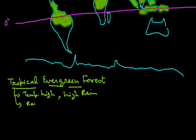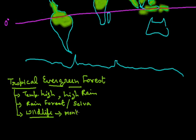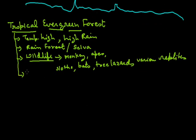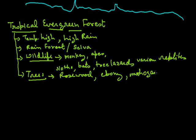These forests are also known as rainforests or Selva. The rainforests are rich in species of wildlife. The wildlife found here includes monkeys, apes, sloth, bats, tree lizards, and various other reptiles, carnivorous animals, etc. If we come to the trees or vegetation, then trees like rosewood, ebony, and mahogany are common here.